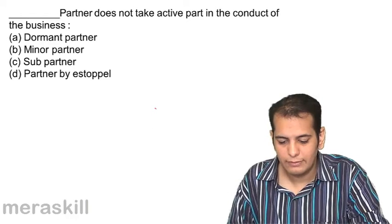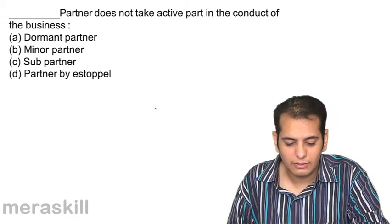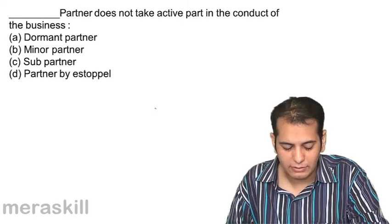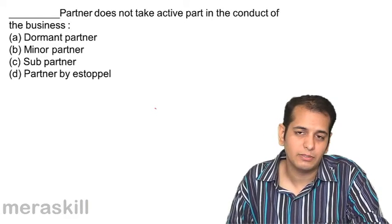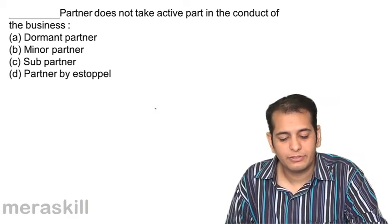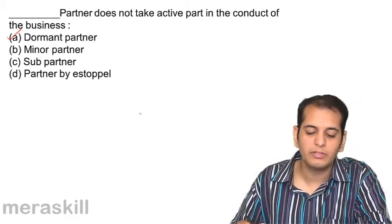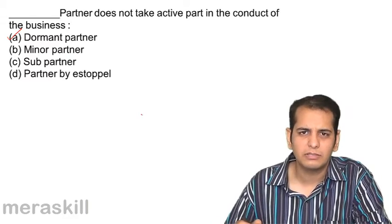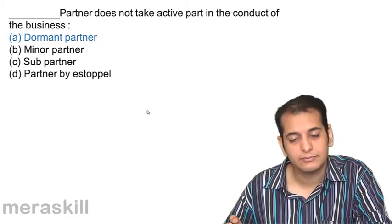First: a blank partner does not take active part in the conduct of business. A. Dormant partner. B. Minor partner. C. Sub partner. D. Partner by estoppel. Who does not take active part? That is always the dormant partner, and that is why he is called the dormant partner, sleeping partner, or passive partner. That is the answer.